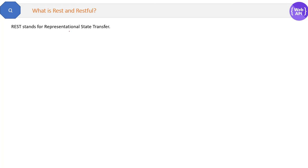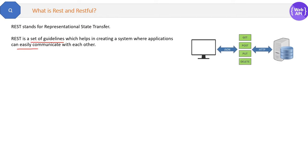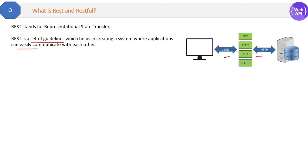What is REST and RESTful? REST stands for Representational State Transfer. REST is a set of guidelines which helps in creating a system where applications can easily communicate with each other. REST APIs do operations with the help of simple HTTP methods: GET, POST, PUT, DELETE. All REST operations can be done by these four HTTP methods. Now let's see in detail what the REST guidelines are.